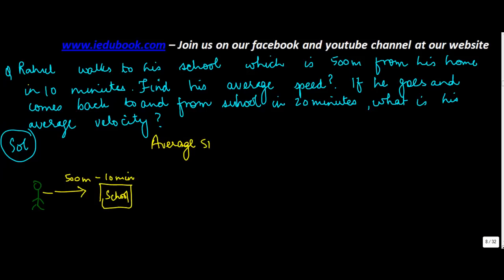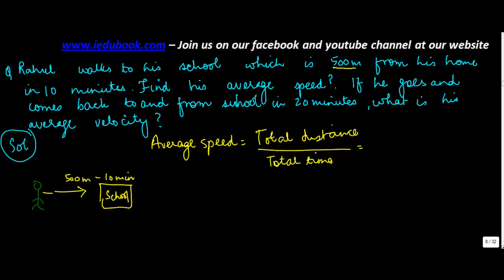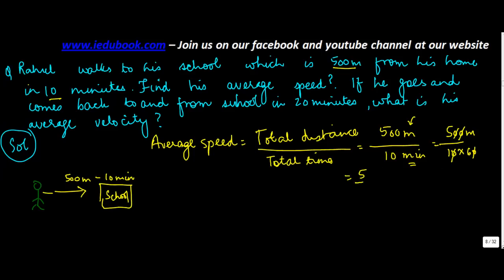Average speed is equal to total distance upon total time. He covered 500 meters in 10 minutes. The speed has to be written in meters per second, so it is 500 meters upon 10 into 60, which gives 5 upon 6 meters per second, or 0.833 meters per second. So the average speed of Rahul is 0.833 meters per second.